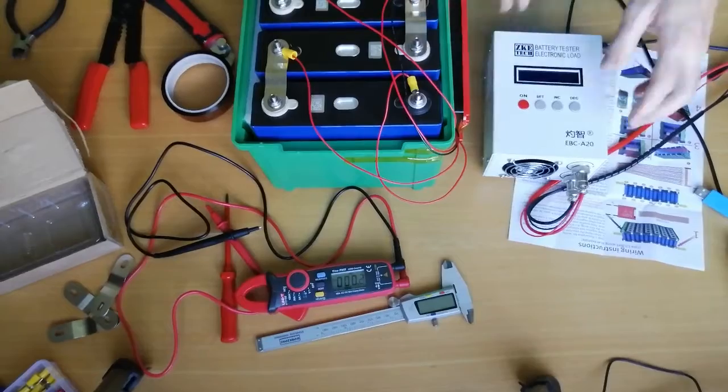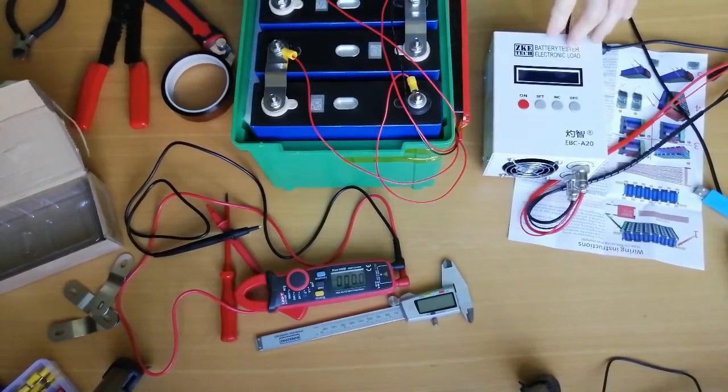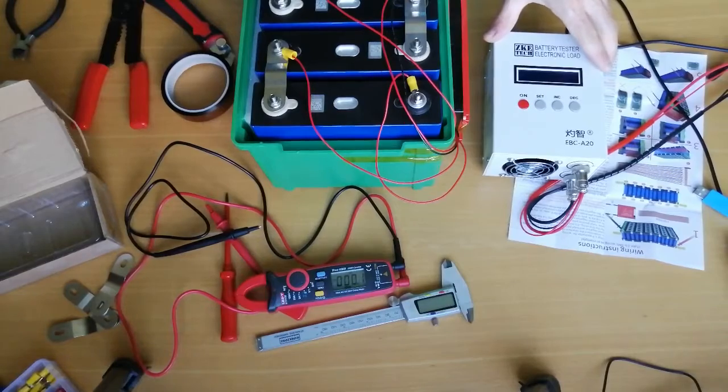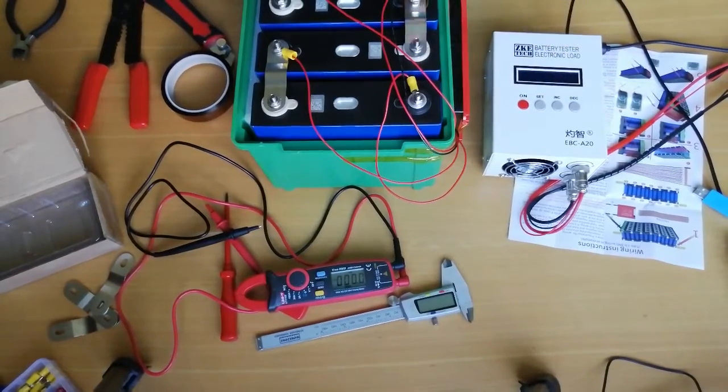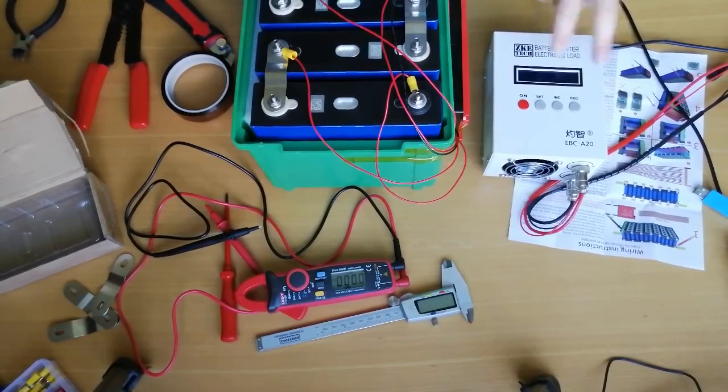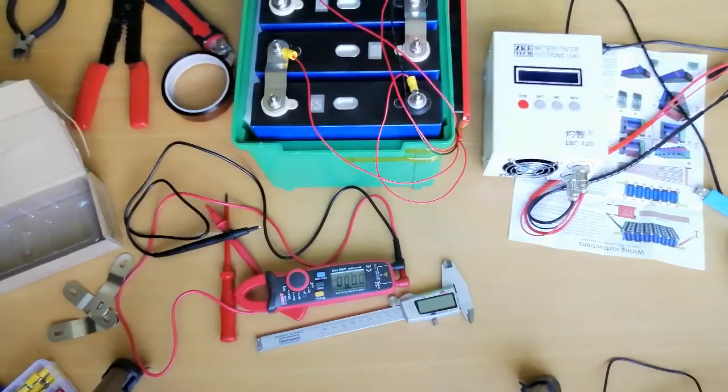And after this procedure we can already attach the charger. I put the charger to 14 volts at the beginning and 5 amps, that's the maximum of the charger. Yeah, and then we have to wait a bit. 5 amps is not that much for a 120 amp hour battery, so it will definitely take a couple of hours. So see you later.